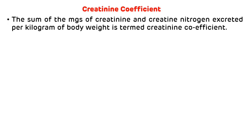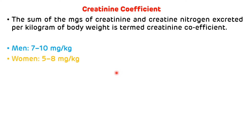Creatinine coefficient is another important viva question. It is defined as the sum of milligrams of creatinine and creatine nitrogen excreted per kilogram of body weight. The normal value for the creatinine coefficient is 7–10 mg/kg in men and 5–8 mg/kg in women.